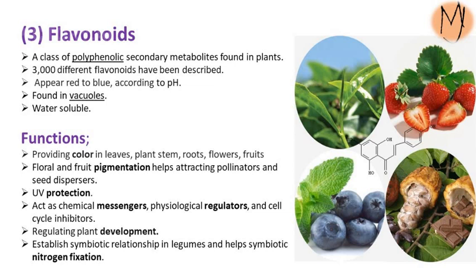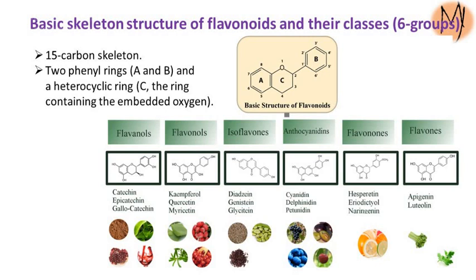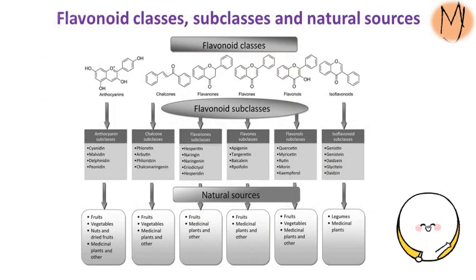Flavonoids also act as cell cycle inhibitors, regulate plant development, and establish symbiotic relationships in legumes during nitrogen fixation. The basic skeleton structure of flavonoids is a 15-carbon skeleton consisting of two phenyl rings, denoted A and B, and a heterocyclic ring denoted C — the ring containing the embedded oxygen. There are six types of flavonoids: flavonoids, flavonols, isoflavones, anthocyanins, flavanones, and flavones. This slide also shows flavonoid classes, subclasses, and natural sources.